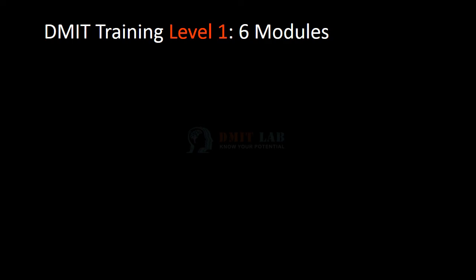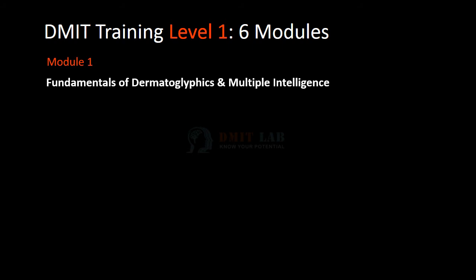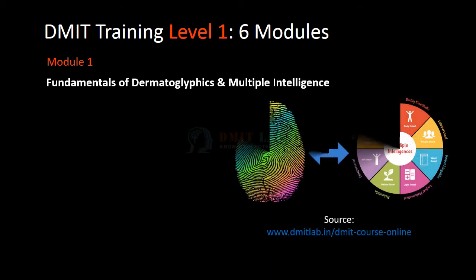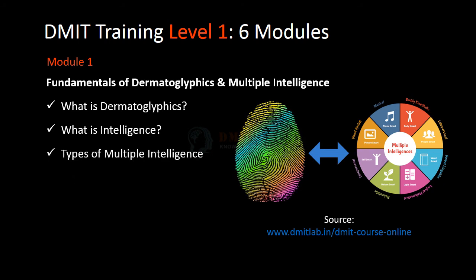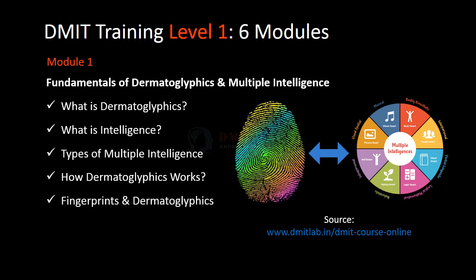Welcome to DMIT training program level 1, divided into 6 modules. In module 1 you will learn fundamentals of Dermatoglyphics and Multiple Intelligence. In that you will learn what is Dermatoglyphics, what is intelligence, types of multiple intelligence, how Dermatoglyphics works, fingerprints and Dermatoglyphics usage, and the difference between fingerprints and astrology.